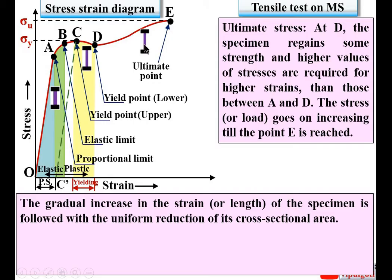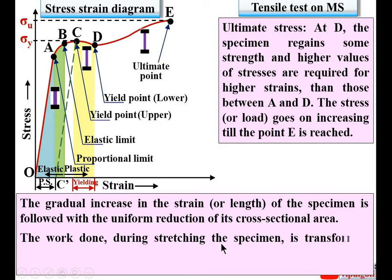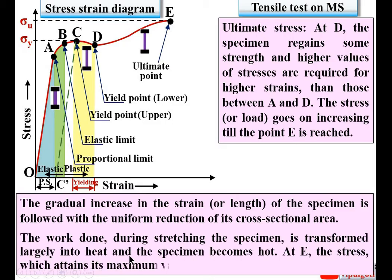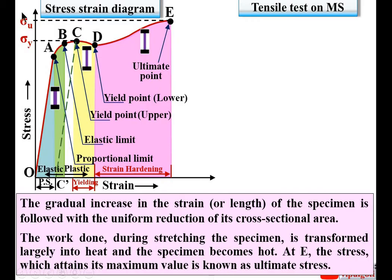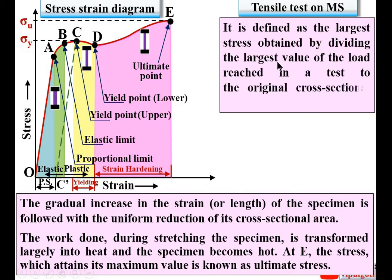The specimen's cross-sectional area decreases gradually during D to E. The work done during stretching the specimen is transformed largely into heat, and the specimen becomes hot between points D and E. At point E, the stress attains its maximum value, known as ultimate stress. This pink-colored portion is known as strain hardening. Ultimate stress is defined as the largest load reached in the test divided by the original cross-sectional area of the specimen, denoted sigma U.